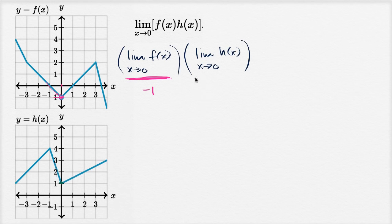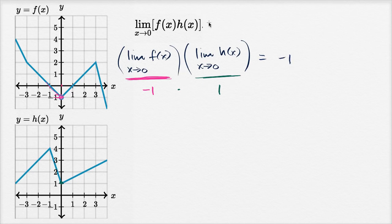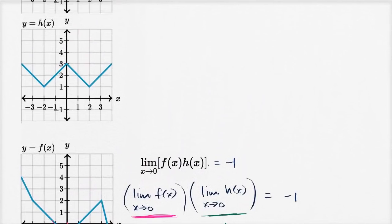So this limit is one, and negative one times one equals negative one. Let's do a few more of these.